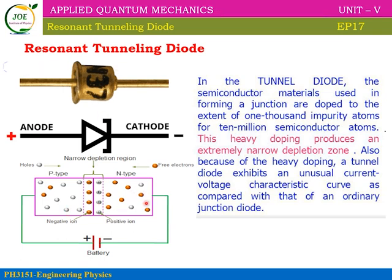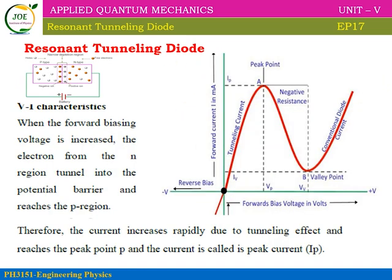The diode is actually a switching device. In the tunneling process, the depletion layer is narrow — this is called resonant tunneling. The working principle: battery plus connects to the P-type. In forward bias, electrons from the N-region overcome the potential barrier at the junction, and current increases rapidly due to the tunneling effect.